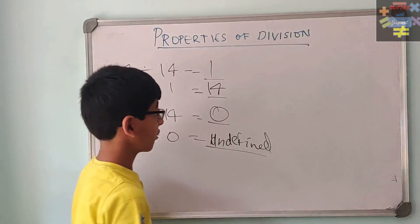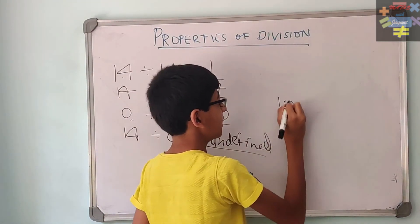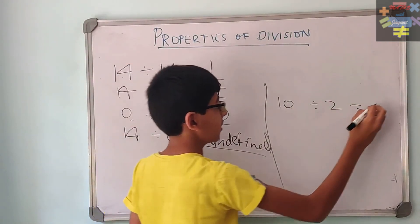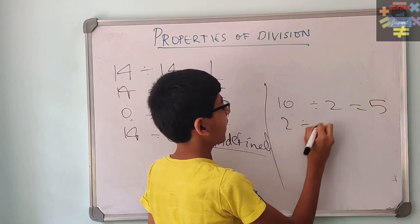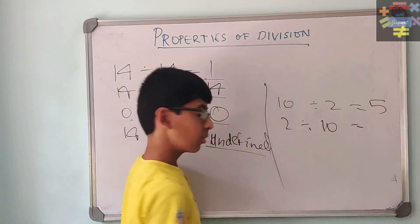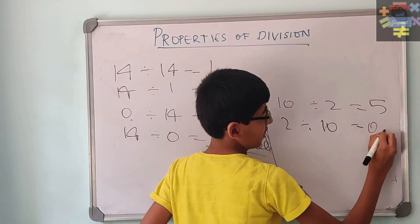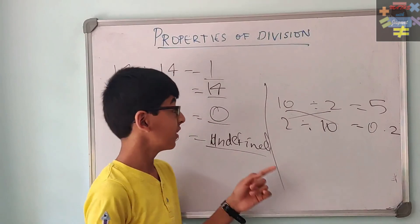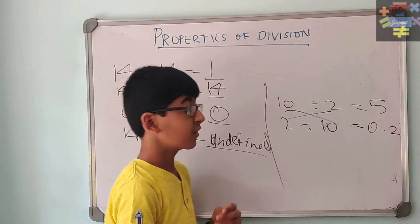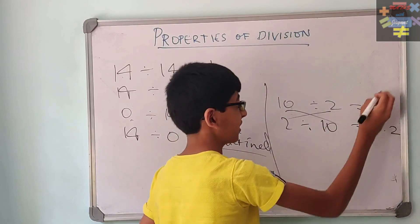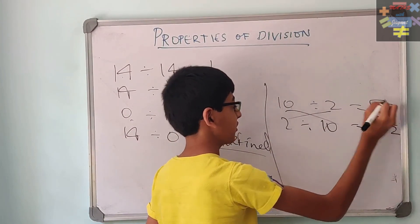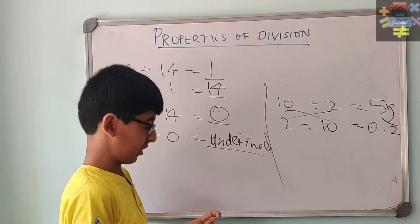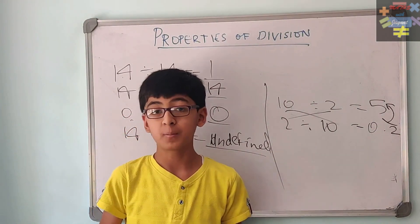Let us also solve this: 10 divided by 2. What is 10 divided by 2? It is 5. And what is 2 divided by 10? 2 divided by 10 is going to give us 0.2. So here you see, we changed the places, and we cannot expect the answers to be the same — see how different the answers are. So the order property does not work in division. Hope you understood the basic properties of division.